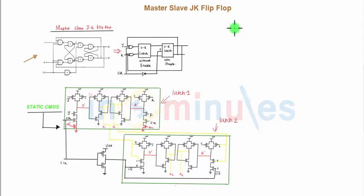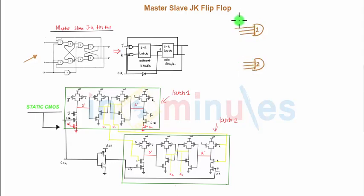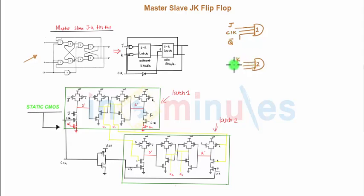We have already seen in the JK latch that the first is a NAND gate comprising three inputs. So let's draw that: this is NAND 1 with three inputs — one, two, three — and this is NAND 2 with three inputs. The inputs for NAND 1 are J, clock or enable, and Q-bar. For NAND 2 the inputs are K, clock, and Q.